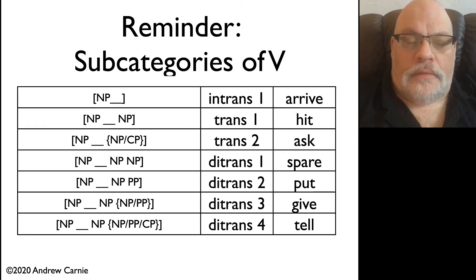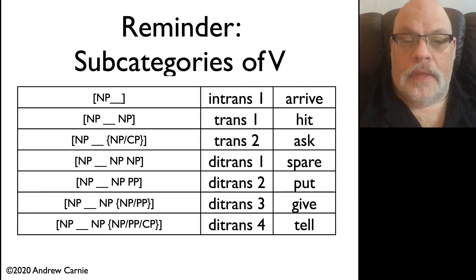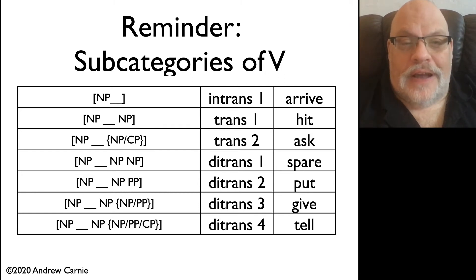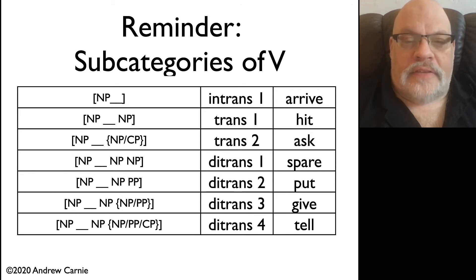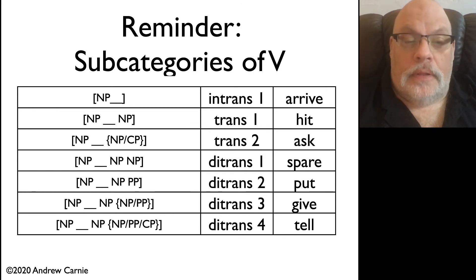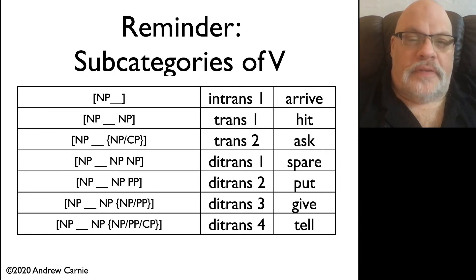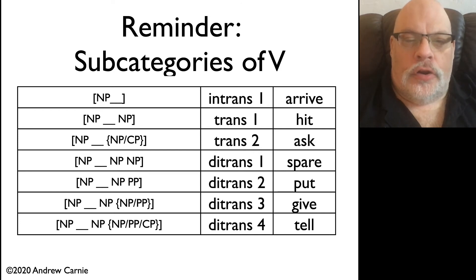You have intransitive forms like arrived: the man arrived. You have transitive forms like Bill loves the computer. You have other kinds of transitive forms like Bill asked the time, or Bill asked what the time is. We also have a whole range of different kinds of ditransitives — ones that allow two noun phrases like I spared the class the boring lecture, ones that require a prepositional phrase like I put the book on the table, and ones that allow two or even three different structures. Those were subcategories — where what's important are the categories of the elements that occur with the particular verb.